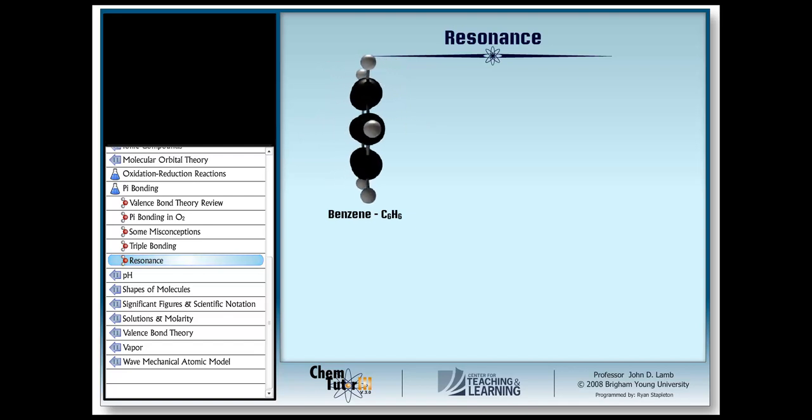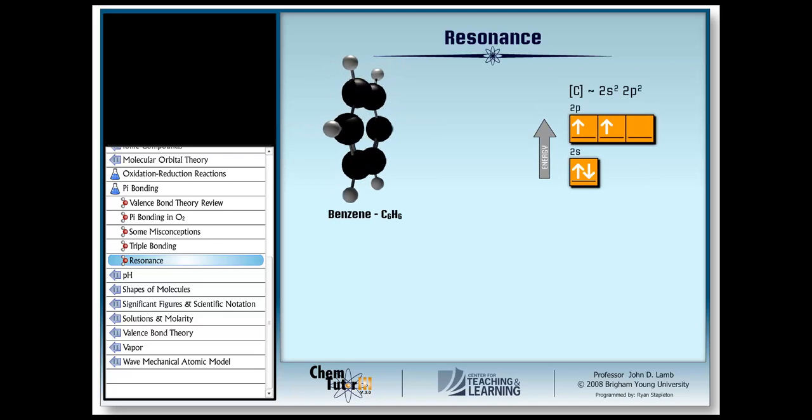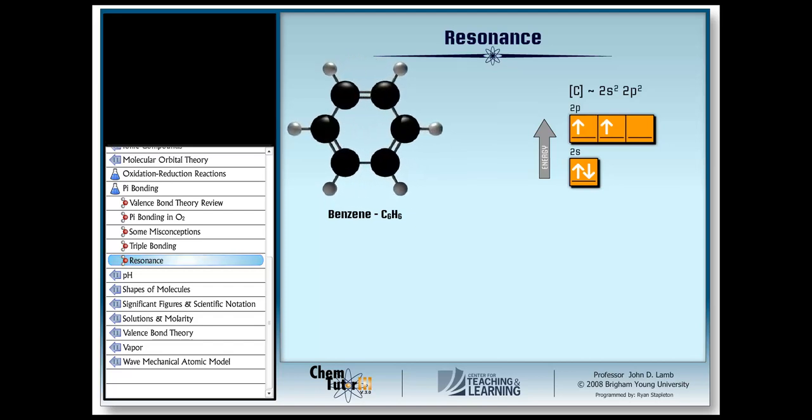Now, let's take a look at the valence bond model showing how the bonds in benzene are constructed. First, let's look at the valence electron configuration of carbon. Each carbon atom has a filled 2S subshell and two electrons in the p orbitals as shown here. Now, if you look at the molecule, you notice that each carbon is bonded to three atoms, two neighboring carbons and one hydrogen.